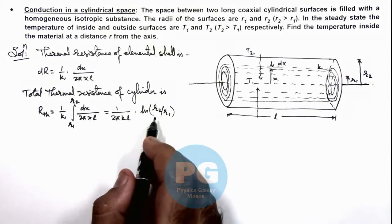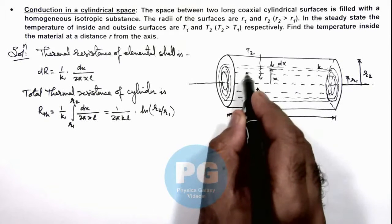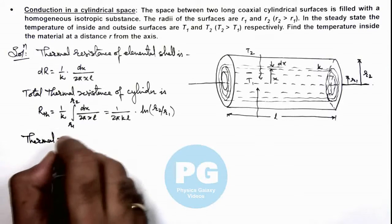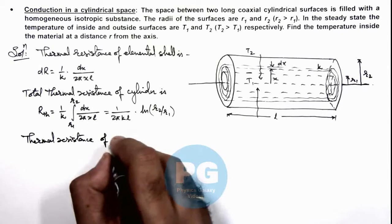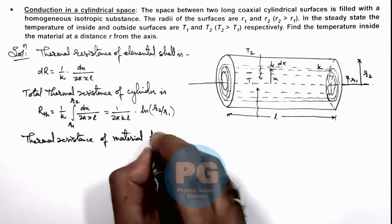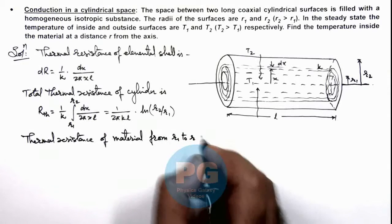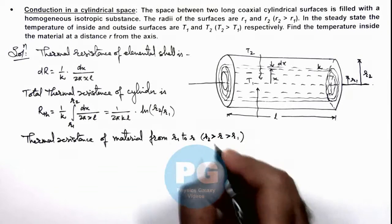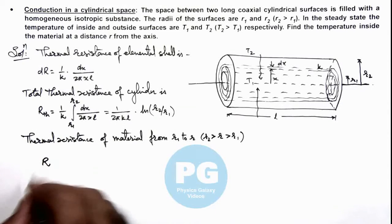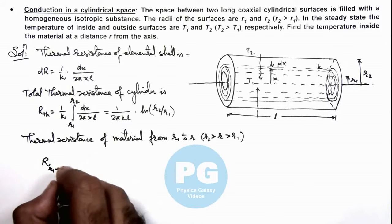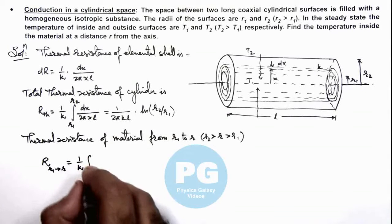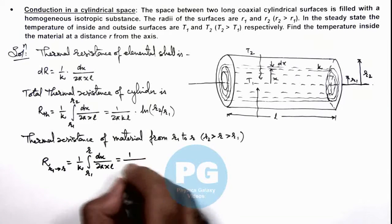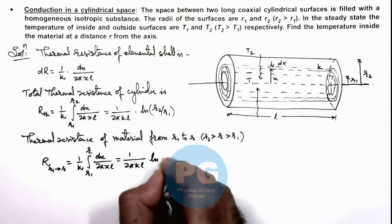Similarly, if we calculate the thermal resistance for the inner region from r1 to some value r, where r is any distance greater than r1 but less than r2 within the material of the cylinder, we can write this resistance as: R = (1/k) * integral from r1 to r of dx/(2π x l), which on integration gives (1 / 2π k l) * ln(r/r1).